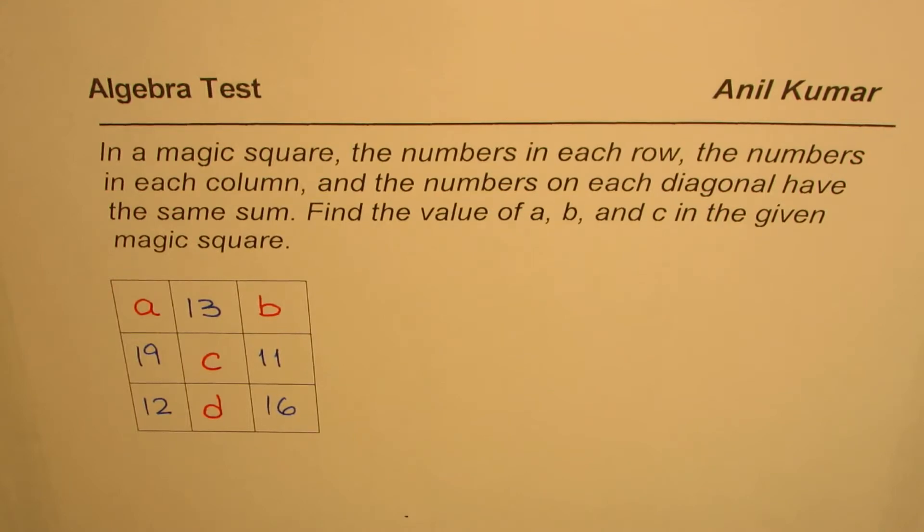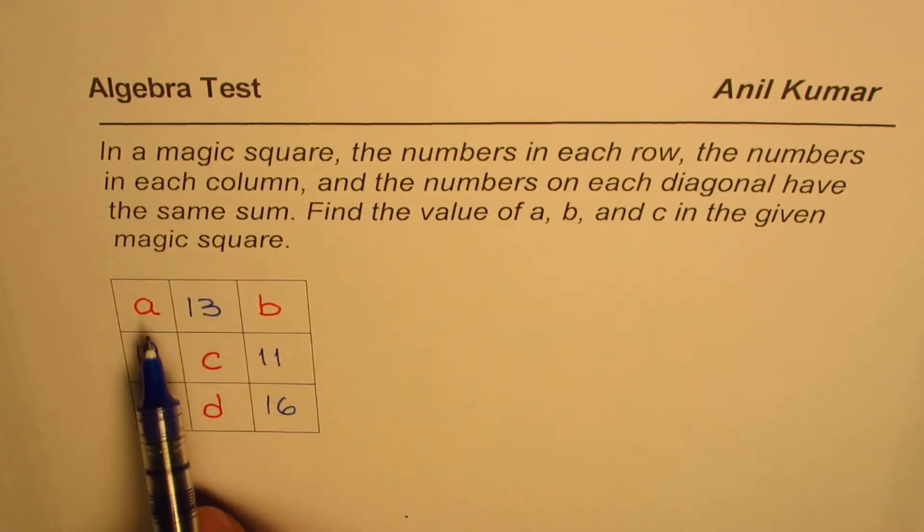Find the value of A, B, and C in the given magic square. That's the 3 by 3 magic square. You need to find the values of A, B, C, and D so that the sum of rows, columns, and diagonals is exactly the same.